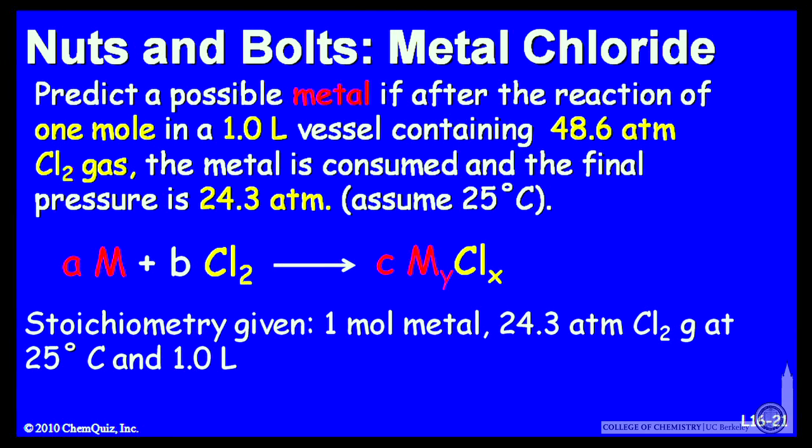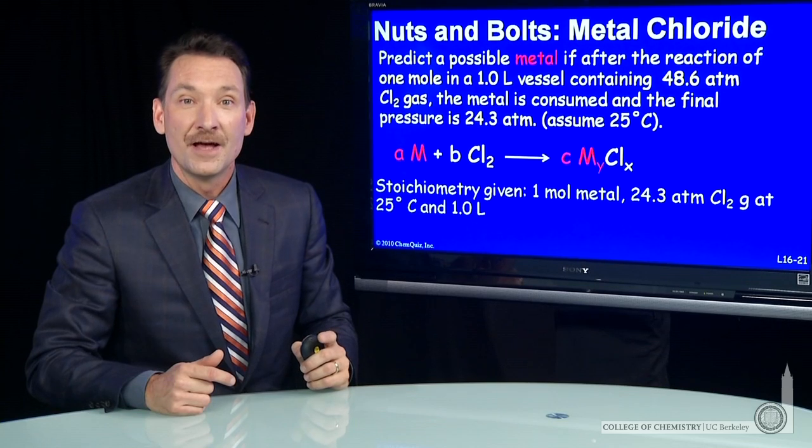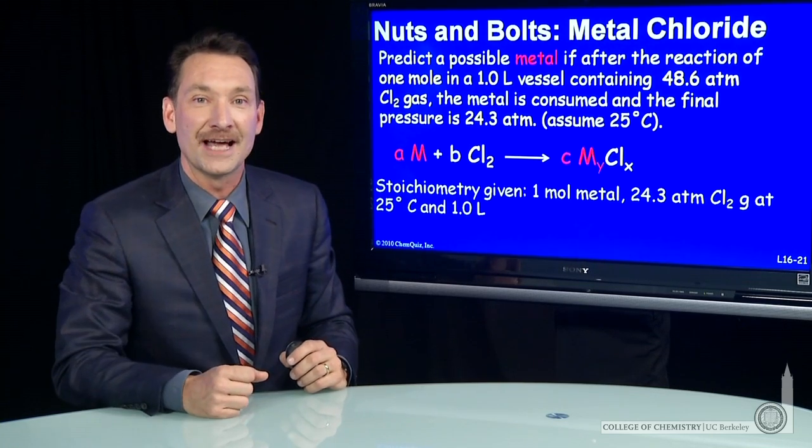I can use the ideal gas law to figure out how many moles of chlorine that is. So 24.3 atmospheres of chlorine are used, half of the original, at 25 degrees C and 1 liter. Let's figure out how many moles of chlorine gas that is.